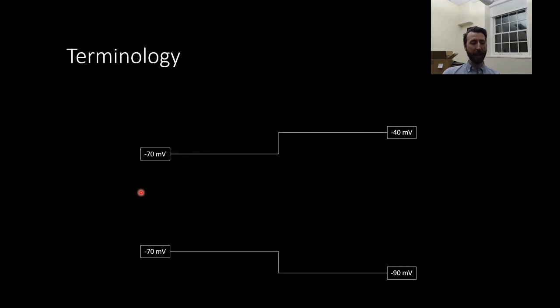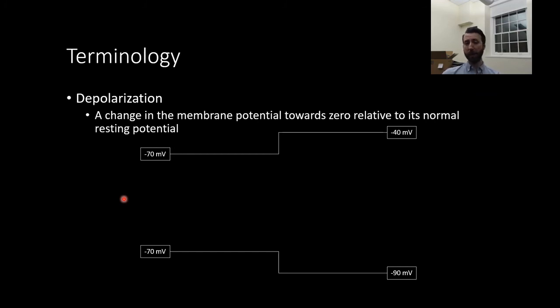Okay, before we move on and talk about the action potential, let's get some terminology established. The first is depolarization. A change of the membrane potential towards zero relative to its normal resting potential. Basically, this means any event that causes the neuron to become more positive or less negative, whichever way is easier for you to think of. If ions move in, so positively charged ions move in or negatively charged ions move out, that causes the resting potential to become more positive, less negative. We call that depolarization.